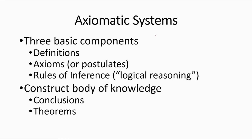In summary, axiomatic systems have three components: definitions, axioms, and rules of inference. With those three things, we construct a body of knowledge by deriving conclusions called theorems. Thank you.